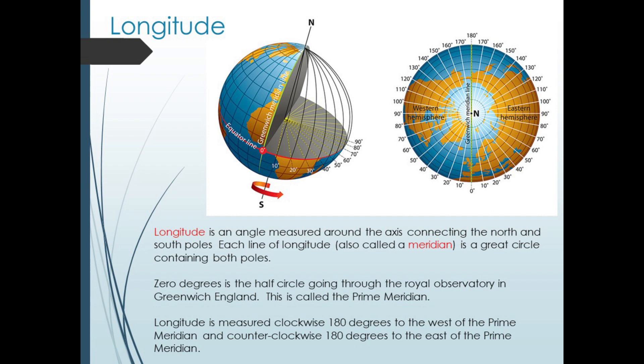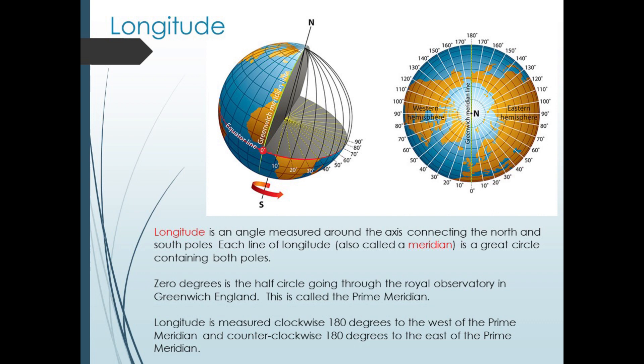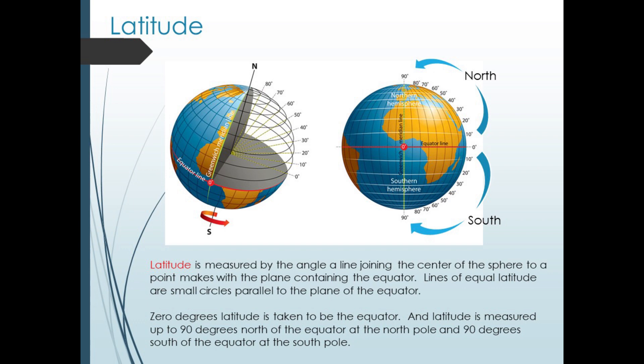Longitude is an angle measured around the central axis connecting the north and south poles. Longitude lines, which are also called meridians, are all great circles that go through both poles. The zero position is the longitude line going through the Royal Observatory in Greenwich, England. This is referred to as the prime meridian. Viewing Earth from a point above the north pole, longitude is measured clockwise to the west of the prime meridian and counterclockwise to the east. Both directions measure from 0 to 180 degrees, around to the antimeridian.